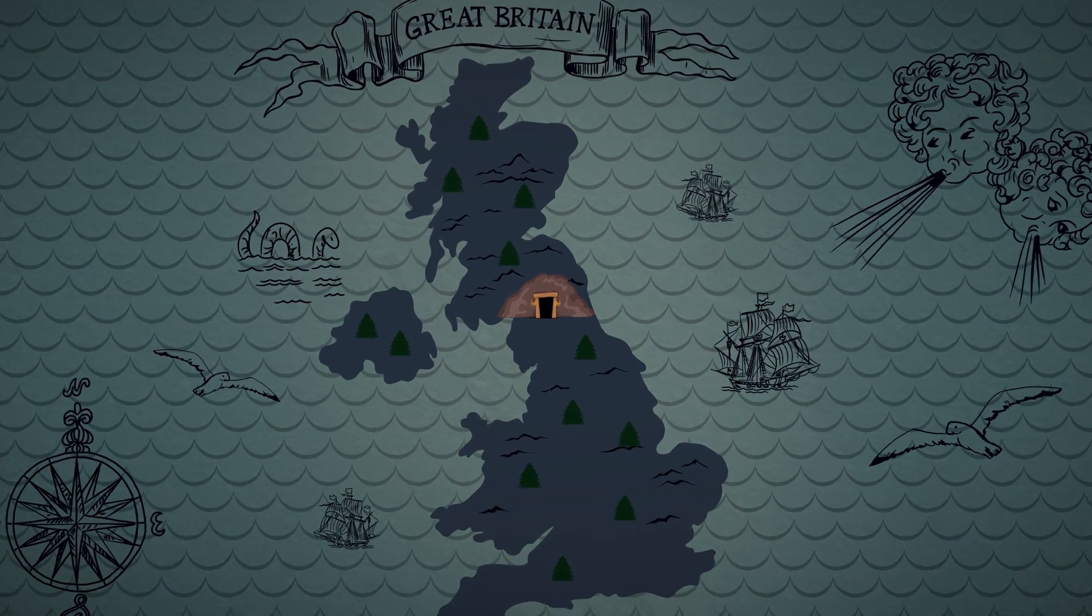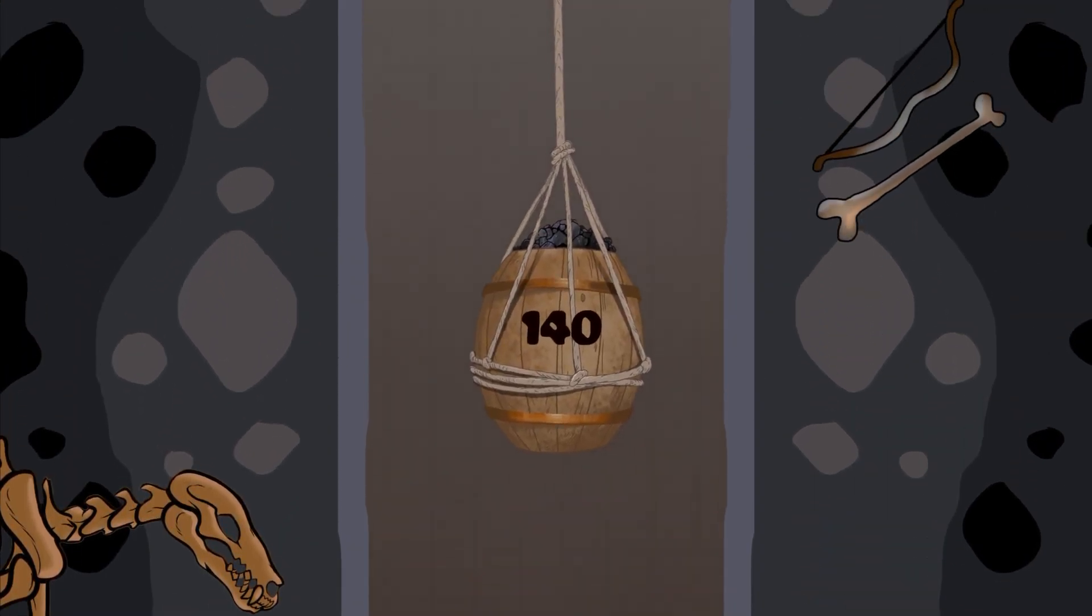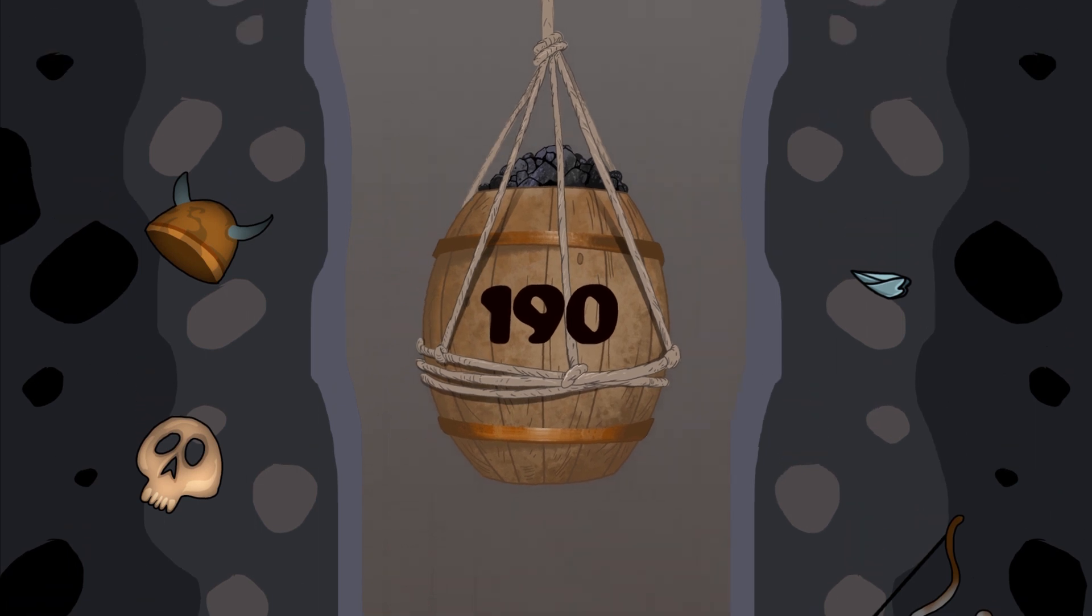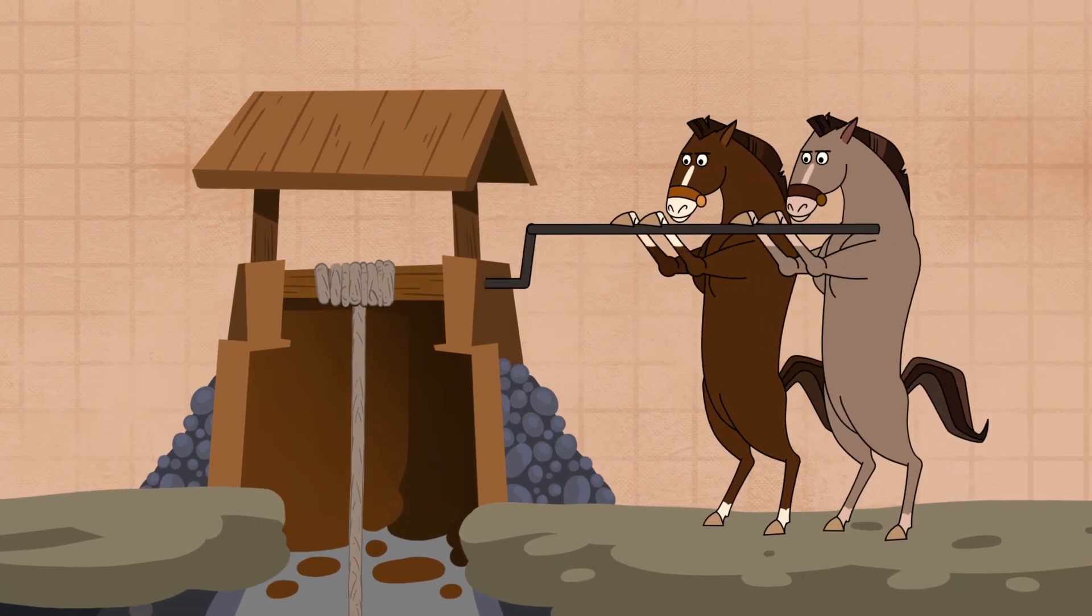At that time in Britain, in order to collect coal from the mine, huge barrels were used with the capacity from 140 to 190 litres. The barrel was pulled up with the help of two horses.